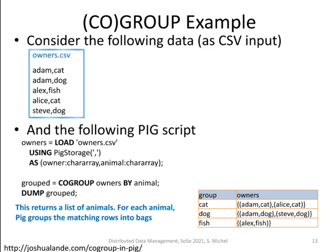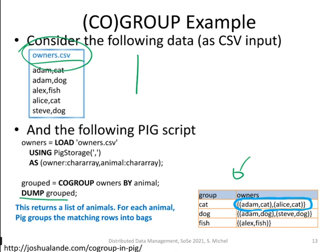There is also a COGROUP operation. For example, with a CSV file of owners containing person names and their cats, you can group the owners relation by animal. Using DUMP to output the result, you see that instead of a simple aggregated count, the output contains the grouping key along with the entire sub-table belonging to that group. For instance, the group 'Kitt' contains Adam Kitt and Alice Kitt as entries.